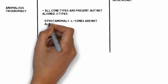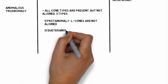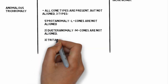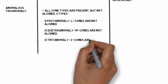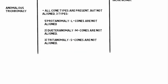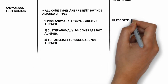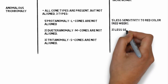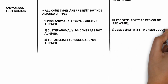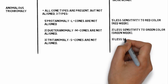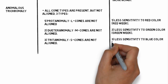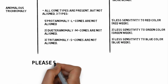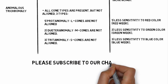Trichromacy is subdivided into three types. The first is protanomaly, in which L cones are not aligned. The second is deuteranomaly, in which M cones are not aligned. The third is tritanomaly, in which S cones are not aligned. Misalignment of L cones leads to less sensitivity to red color, misalignment of M cones leads to less sensitivity to green color, and misalignment of S cones leads to less sensitivity to blue color.